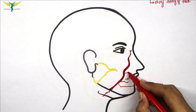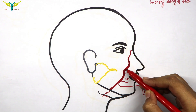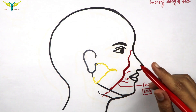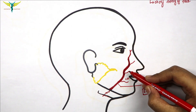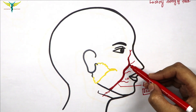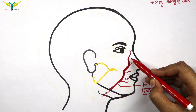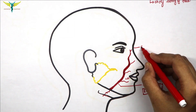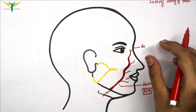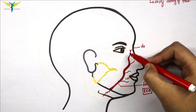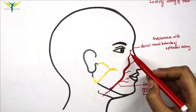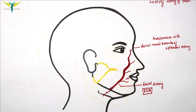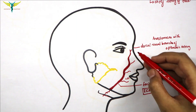It then gives the superior labial artery and, towards the nose, forms the lateral nasal artery. It then ascends along the medial aspect of the eye, where it ends by anastomosing with the dorsal nasal branch of the ophthalmic artery. This terminal part of the facial artery is called the angular artery.